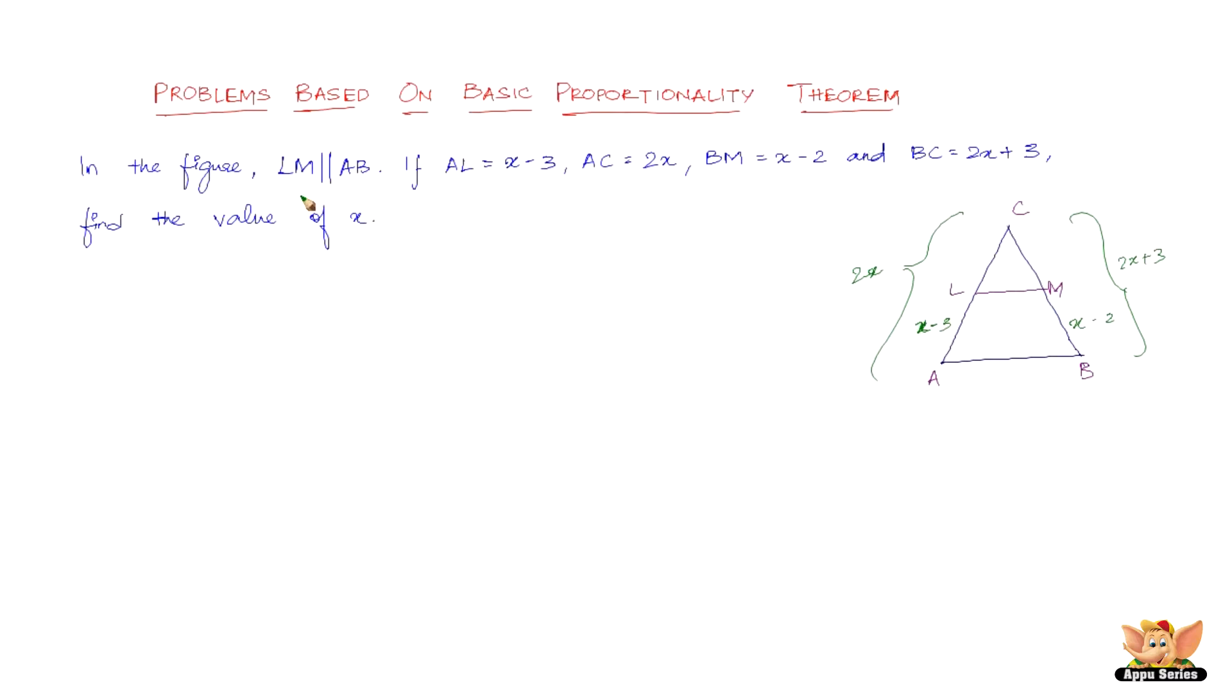This is not very different from the previous problems we've solved. If there is a line parallel to a side in the triangle, then it divides the other two sides in the same ratio. Since we have LM parallel to AB in triangle ABC, we get AL over LC equals BM over MC.